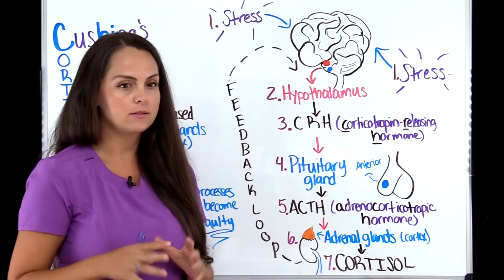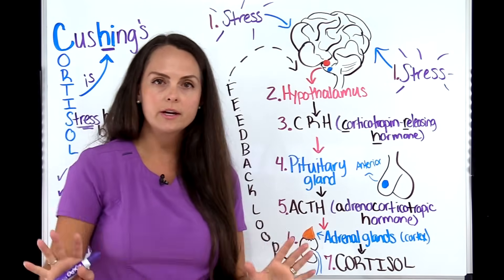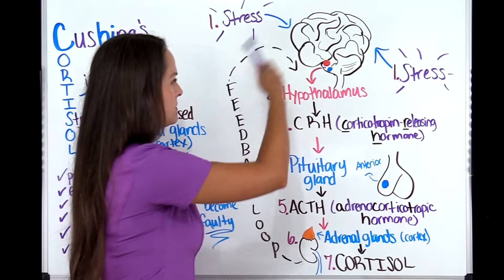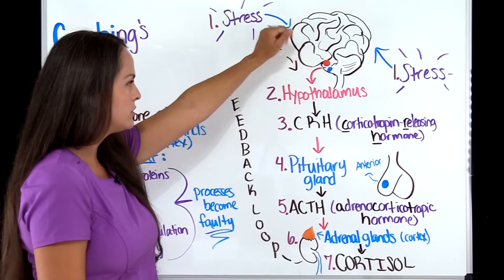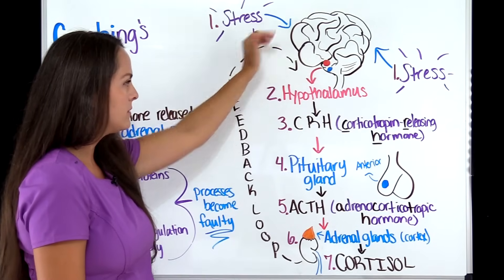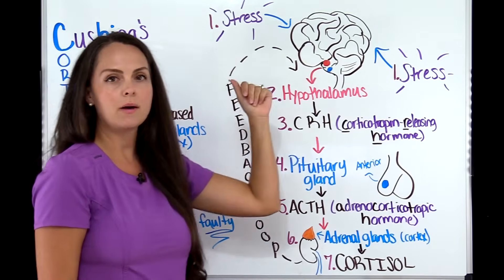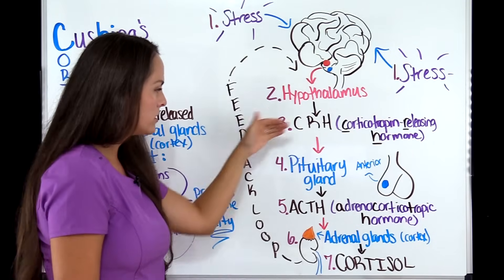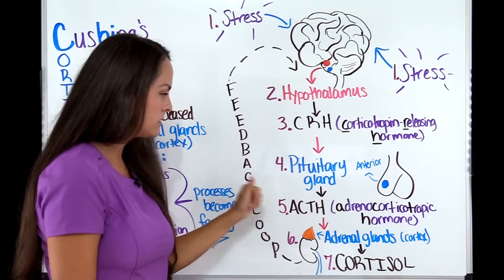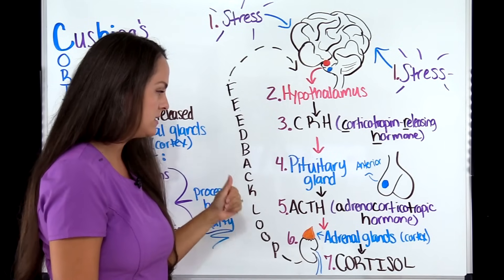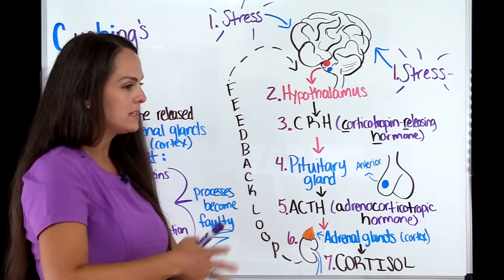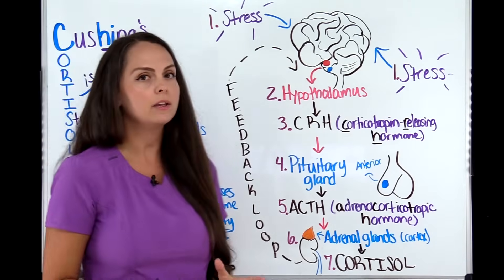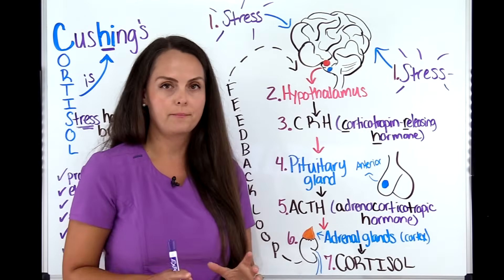The body senses it has enough cortisol and the feedback loop sends that information to the hypothalamus, which stops producing CRH. This in turn causes the pituitary gland to stop producing ACTH. When cortisol is needed again, the whole system kicks back in and normally works beautifully together.